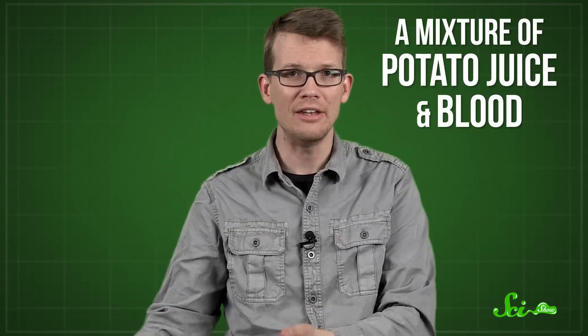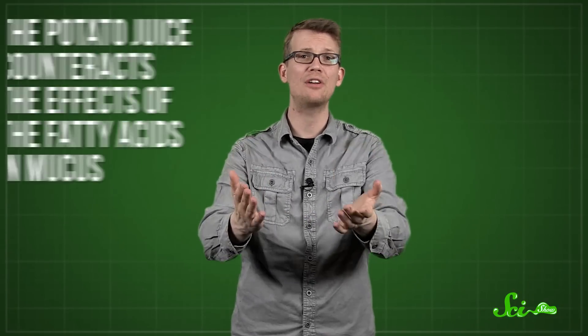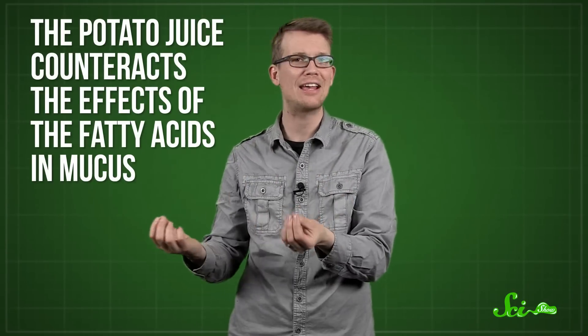At the time, the standard growth medium on cough plates was fairly well established. A mixture of potato juice and blood did the trick. Potato juice might seem like a strange way to grow bacteria, but it was there to counteract the effects of the fatty acids in mucus, which is actually pretty good at inhibiting bacterial growth. By providing pertussis-friendly nutrients, as well as starch to absorb the fatty acids, the potato juice helped the bacteria grow. More importantly, the blood provided material where the pertussis bacterium could really leave its mark.